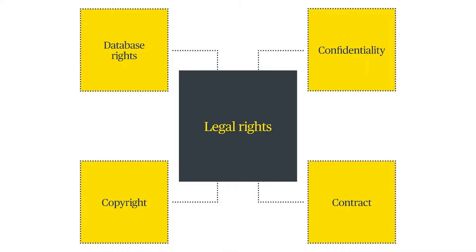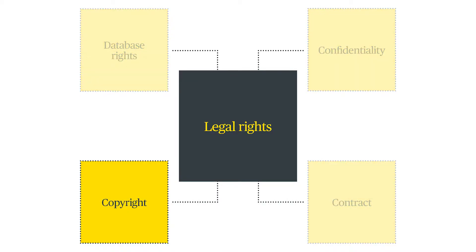One of the most powerful rights which can protect data is copyright. If your data is protected by copyright, you can prevent others creating copies or communicating the data to the public. However, copyright doesn't protect raw information, and to obtain protection there needs to be some originality in the way the information is recorded — it needs to be an intellectual creation of an author which reflects their personality, and this won't apply for many types of data.